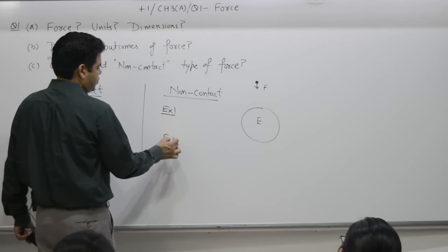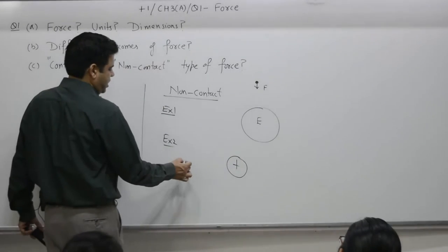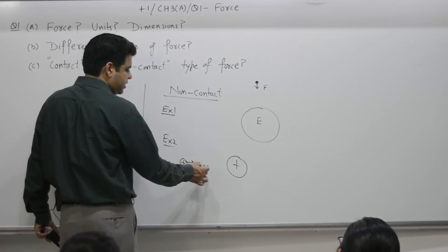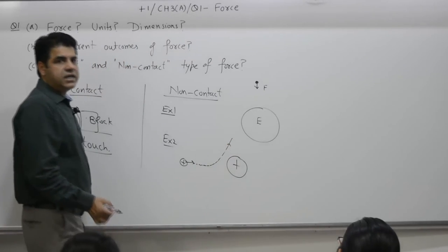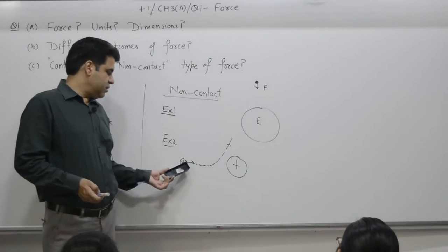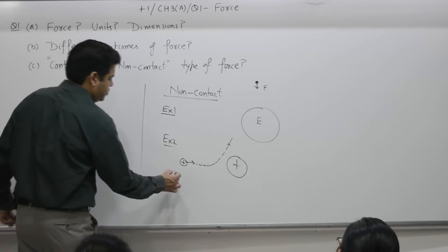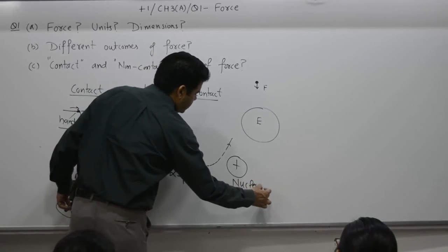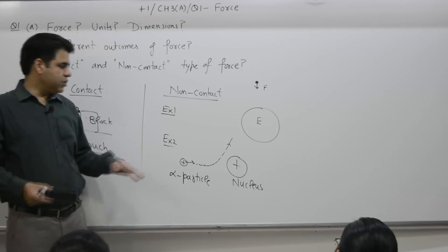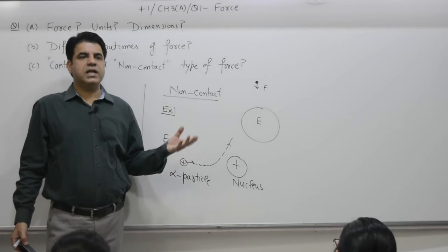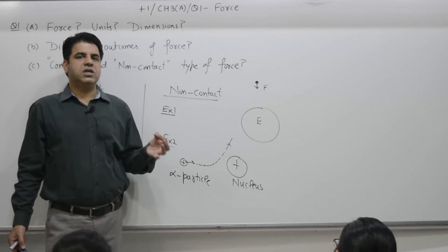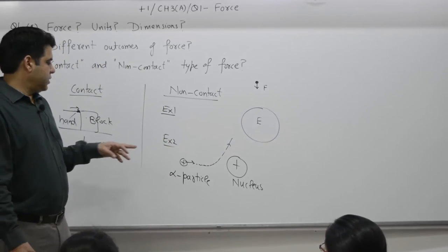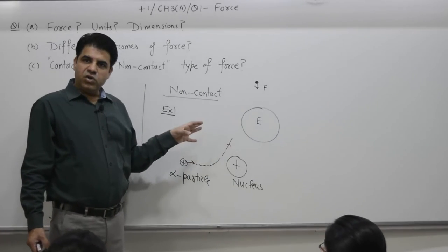Example number two: strong positive charge nucleus. Alpha particle is moving towards the nucleus. Even at this distance, it experiences a force and gets deflected. There is no contact between alpha particle and nucleus. An alpha particle moving towards the nucleus gets deflected because it is under a constant force of repulsion, electric force. Force between two positive charges - a positive charge repels another positive charge. To be discussed in detail in plus two, chapter number one. These are the examples of non-contact where touch is not required.